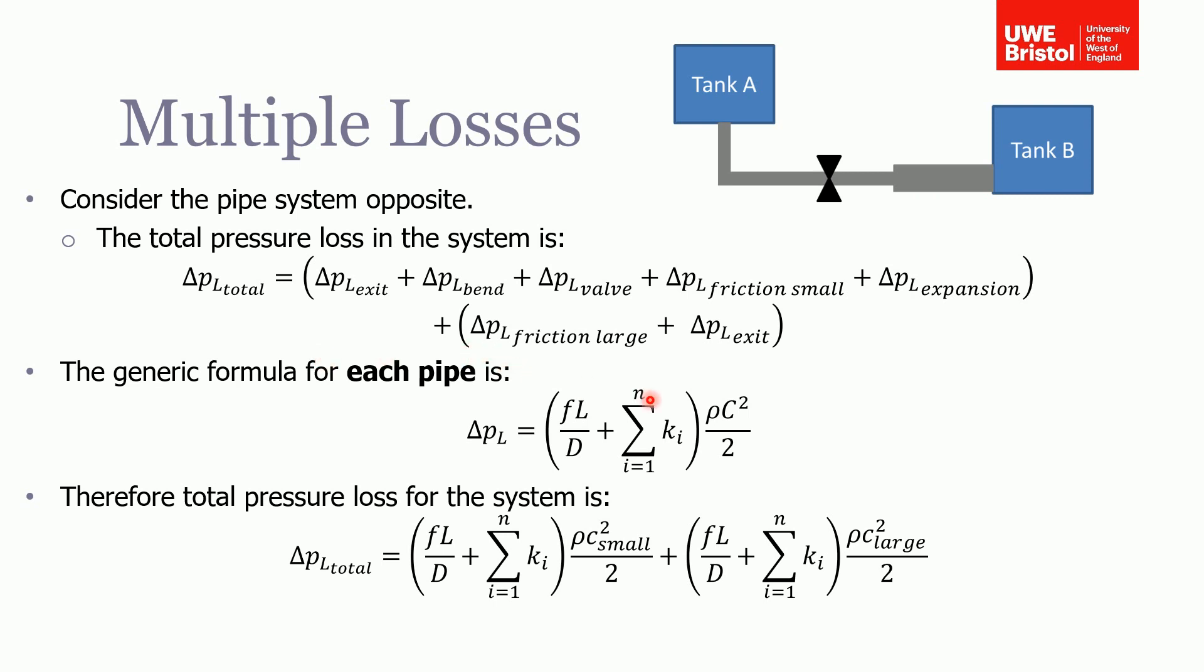This is because if you remember the general formula, the generic formula for each pipe—and what I mean by each pipe is if there's a change in diameter or a change in material, then you need to consider each section of the pipe as a separate pipe.